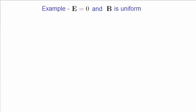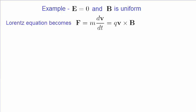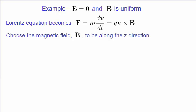Now let's apply the Lorentz equation to a particular situation where the electric field is zero and the magnetic field is uniform in space. So here is the Lorentz equation, but now missing its electric field vector on the right-hand side. The problem becomes much simpler if we make a convenient choice of the magnetic field direction. Remember that the magnetic field in this case is uniform.